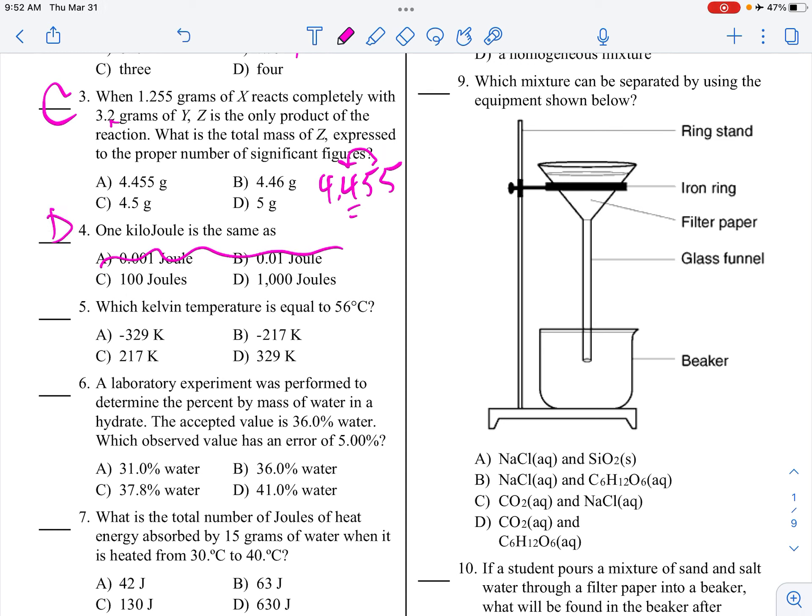36 minus 31 is 5, divided by 36, times 100. This is going to give you 13.89%. That's not what we want. 36 minus 36, that's 0% error. 37.8 minus 36 is 1.8, divided by 36, times 100. That's our answer. This gives me the 5%, choice C.